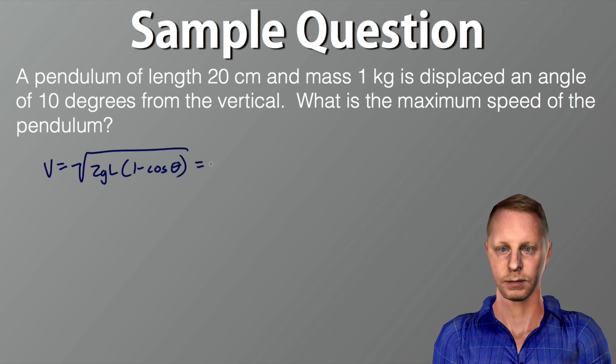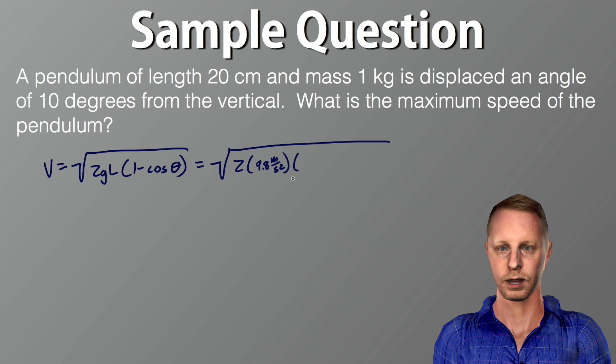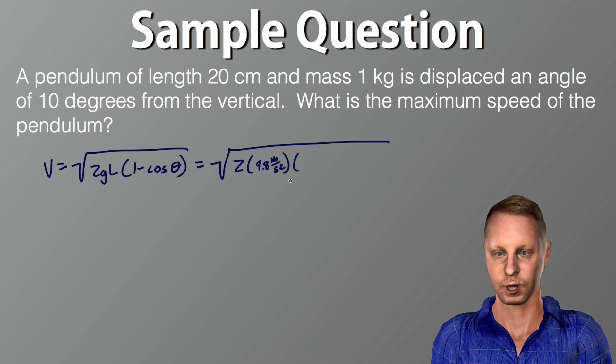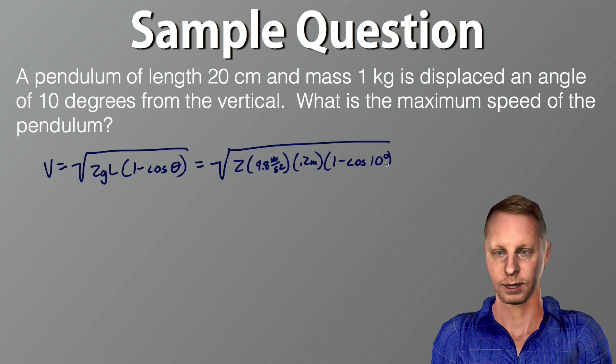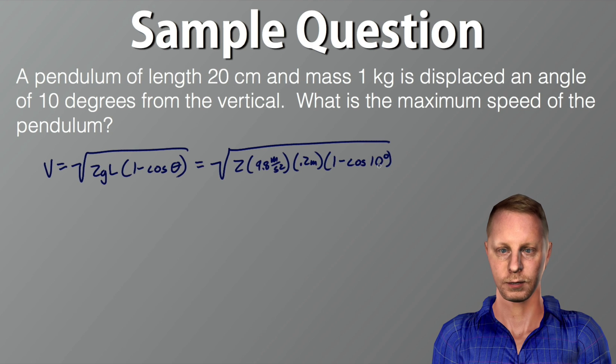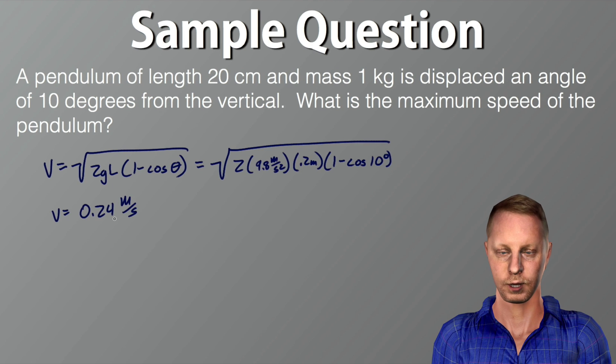Well in this case, if we remembered that formula, or we could re-derive it like we did previously, all we have to do is plug in our values. Two times our acceleration due to gravity on the surface of Earth, 9.8 meters per second squared. Our length of our pendulum, it tells us, is 20 centimeters, or 0.2 meters, times the quantity 1 minus the cosine of our angle, 10 degrees. And in this case, when we're talking about small angles, the smaller the angle is, the more accurate this will be. But really, if you're in the range of under 10 to 15 degrees, it's pretty reasonable estimation. So, making sure my calculator is in degree mode as I go through this, I calculate all this out to be somewhere on the order of about 0.24 meters per second for its maximum speed of the pendulum. And that's going to be at the lowest point.